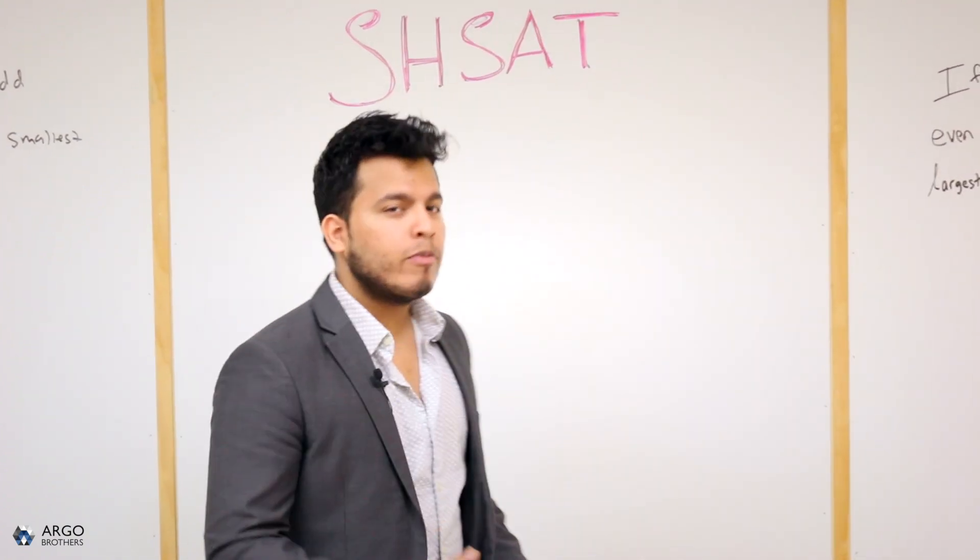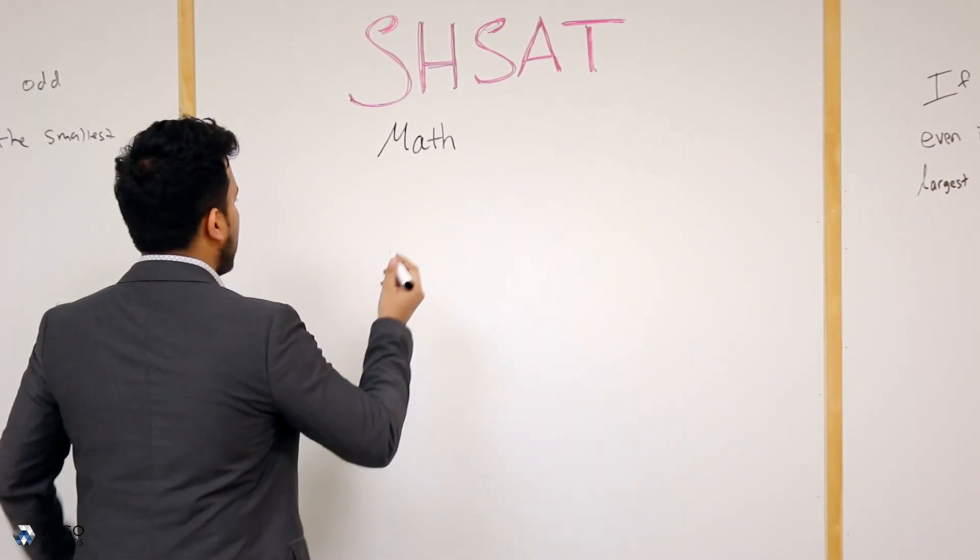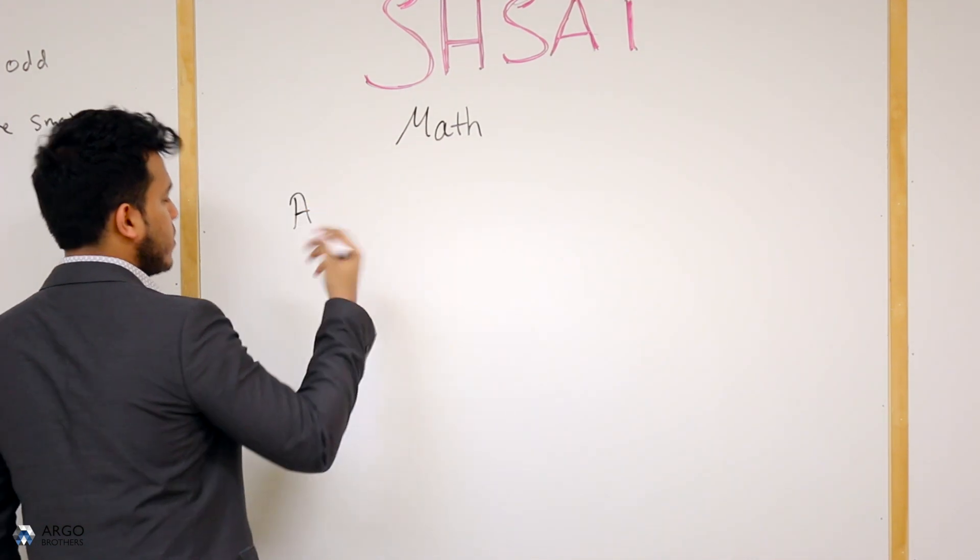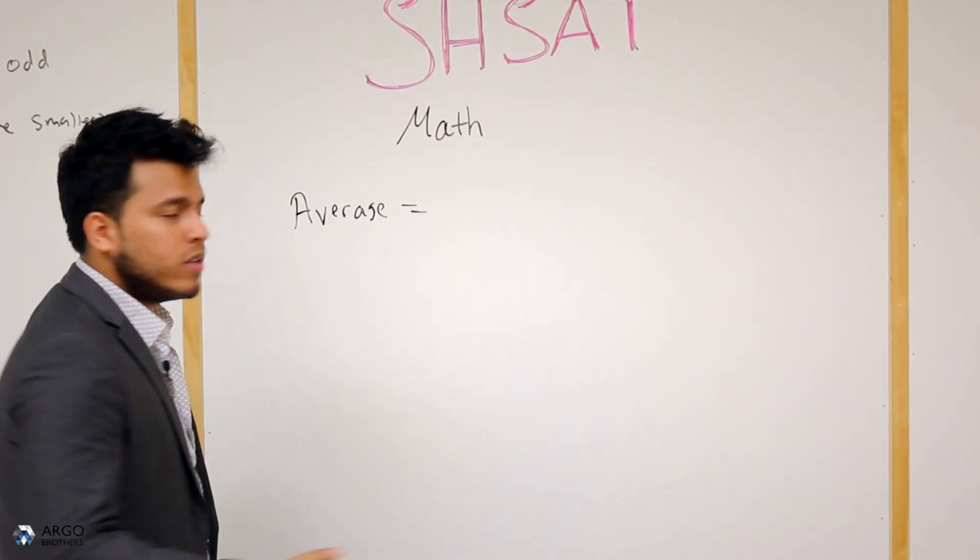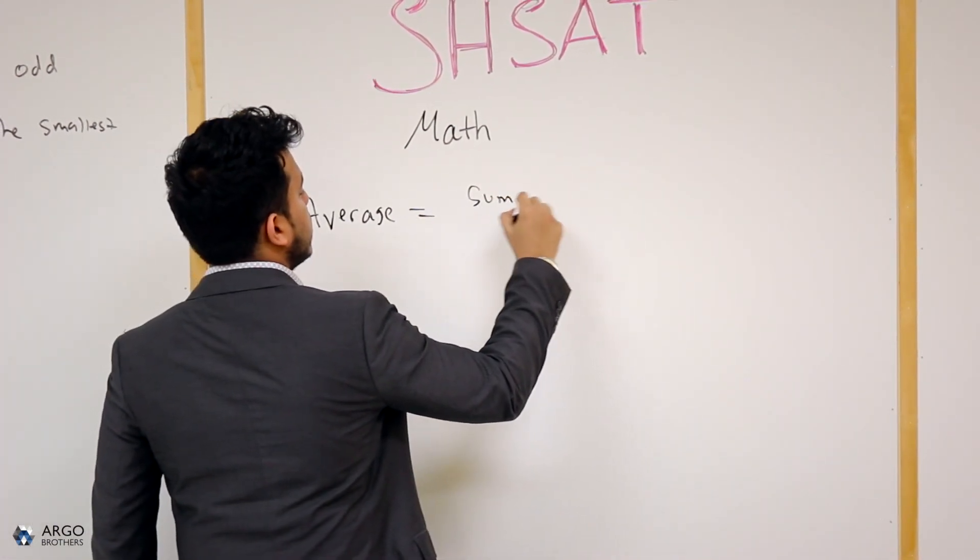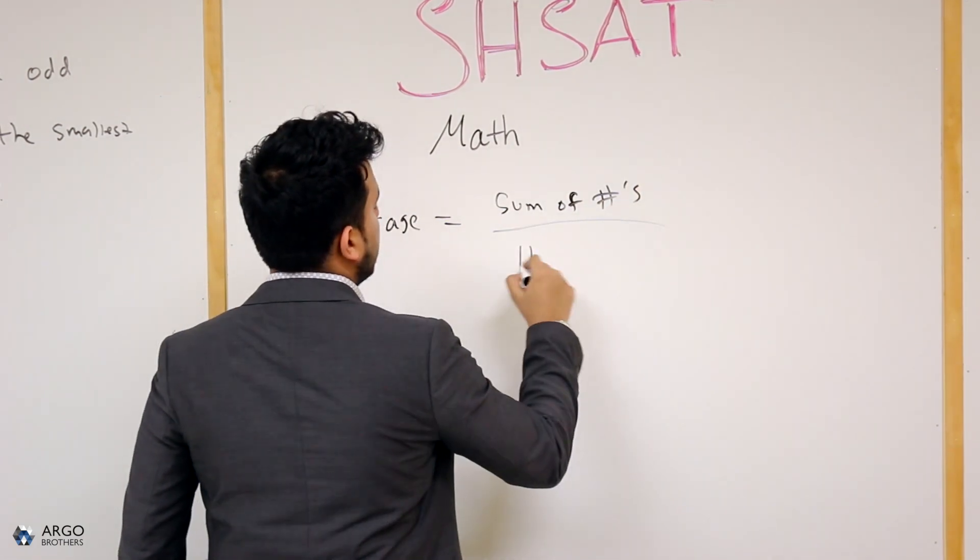Here's one trick to really help you with some of these questions on the Specialized High School exam. Let's go ahead and focus on the average formula because the average formula is actually very important. It's also very simple for most people. The average formula is basically the sum of numbers divided by the number of numbers.